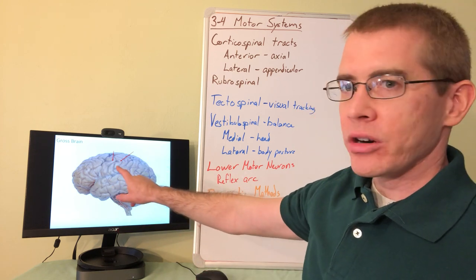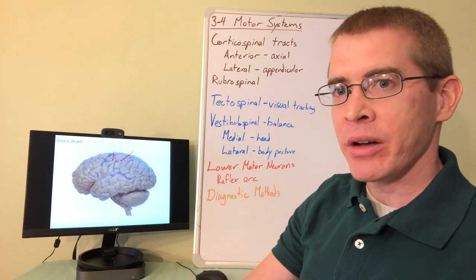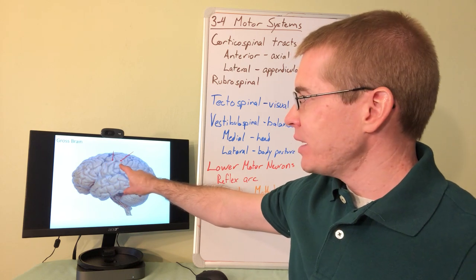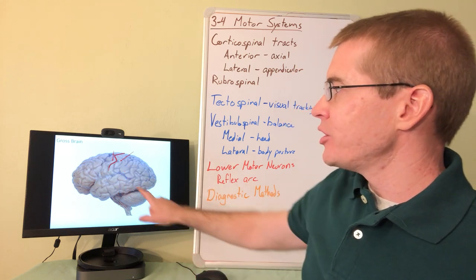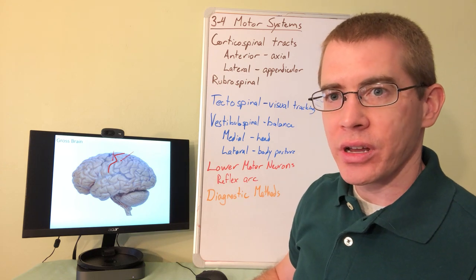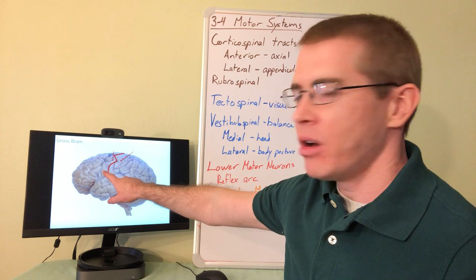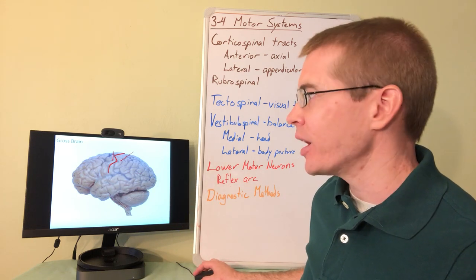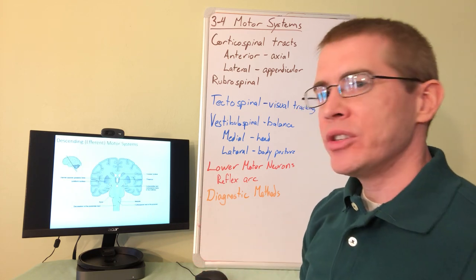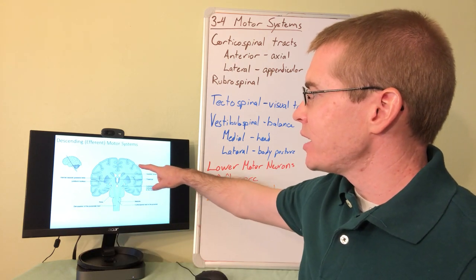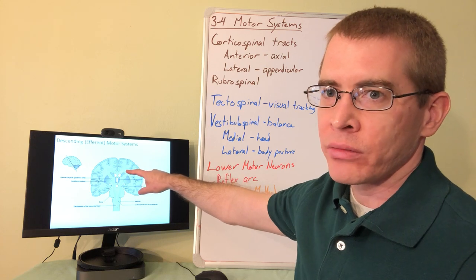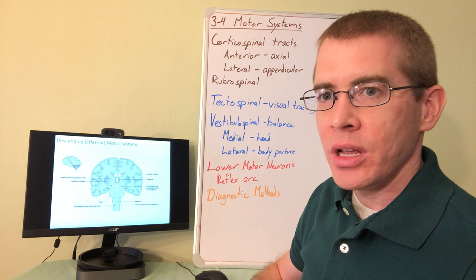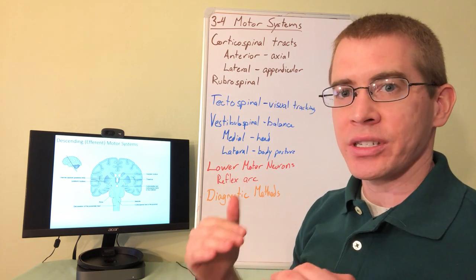In the gross brain, two primary cortices are relevant here: the primary motor cortex and the primary sensory cortex, spanning anterior and posterior to the central sulcus. In this lecture we focus on tracts beginning in the primary motor cortex. Conscious motor neurons begin there, descend through the corona radiata — white matter just below the cortical layers — travel through the internal capsule, specifically the posterior limb, then through the midbrain, pons, and into the medulla.